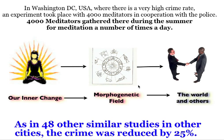They were not visualizing peace. They were not visualizing that the crime rate would go down. They simply went into themselves and became aware of the deep peace within themselves — you could say they became aware of that pure consciousness in the center of their being, and not their thoughts. It seems that this, in some way, maybe through the morphogenetic field, affected people, and there was in fact a 25% reduction in crime in Washington D.C. that summer. You can look all this up on the Internet — it's well documented.